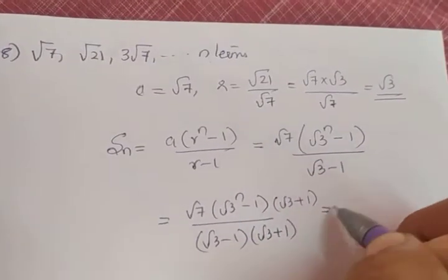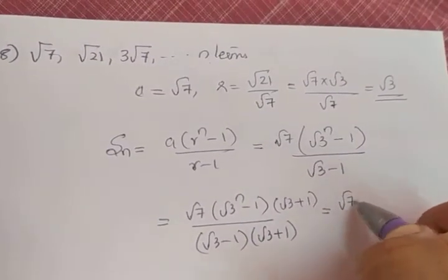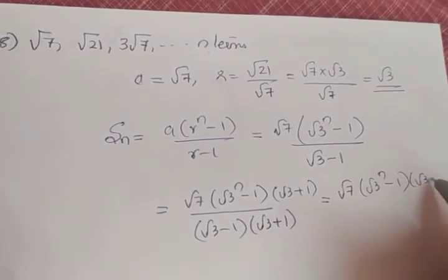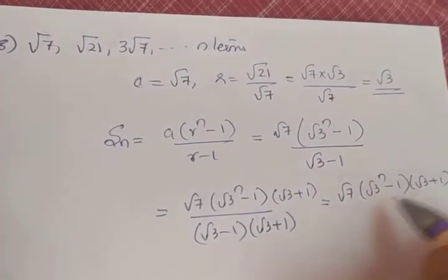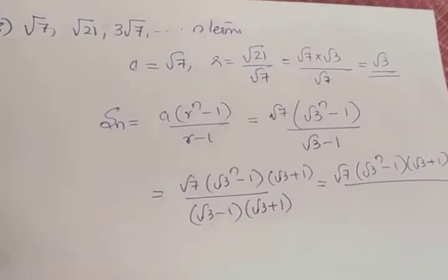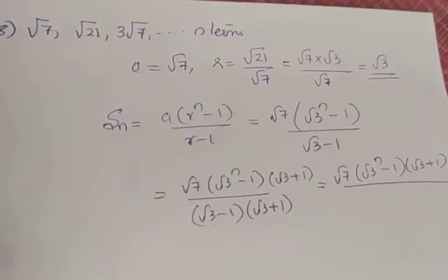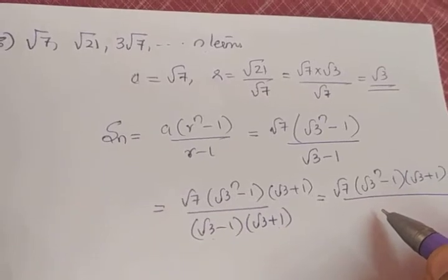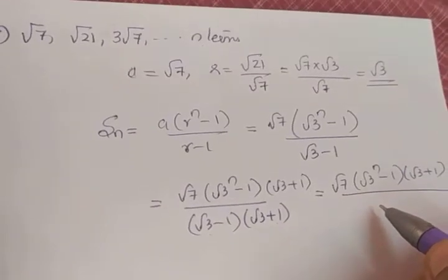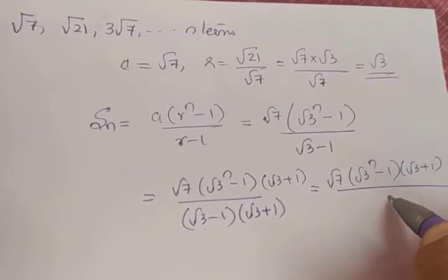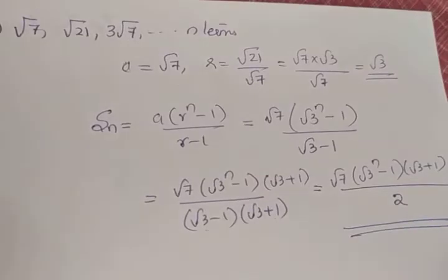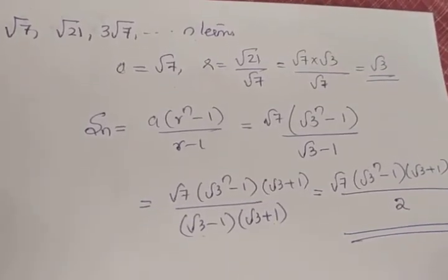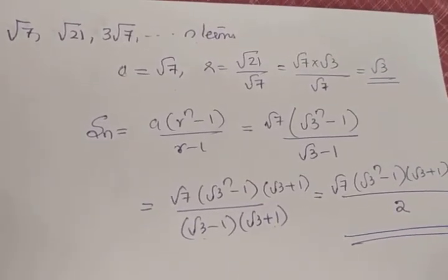So what we get is √7 × (√3)ⁿ⁻¹ × (√3 + 1), divided by — this is of the form (a - b)(a + b) = a² - b². √3 squared is 3, minus 1 squared is 1, so 3 - 1 gives 2. The final answer is √7 × (√3)ⁿ⁻¹ × (√3 + 1) divided by 2.